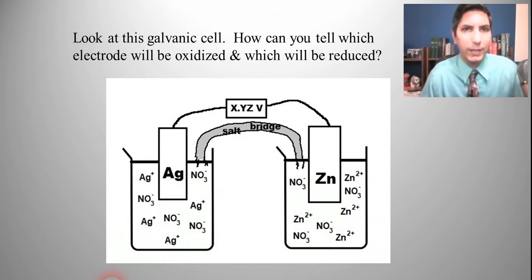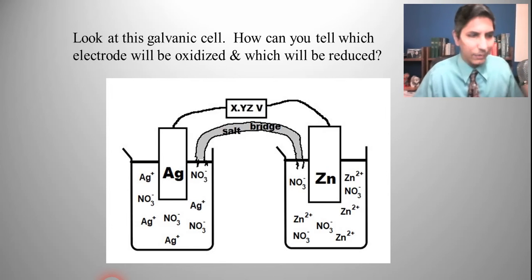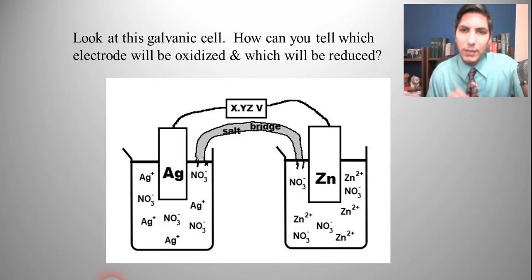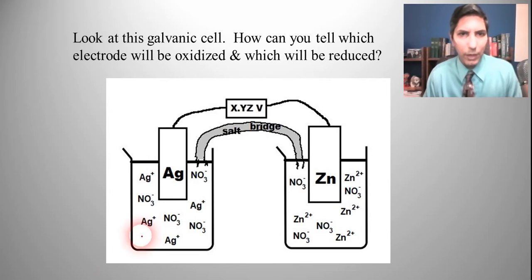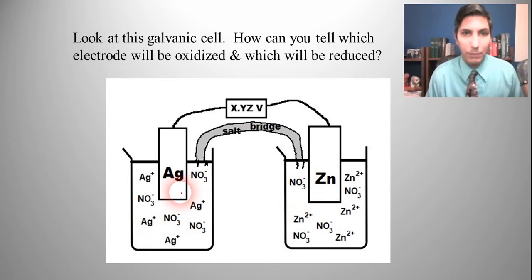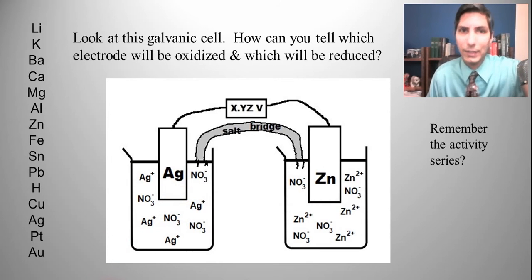If we take a look at this galvanic cell — we looked at the structure of galvanic cells in the last video — one thing we just skimmed over was: how can you tell, just by looking at this battery, which of those two electrodes is going to be oxidized and which one is going to be reduced? Well, it has something to do with the activity series.